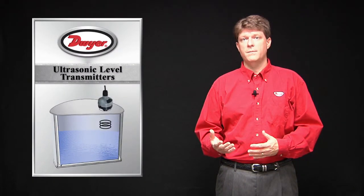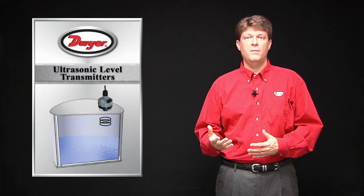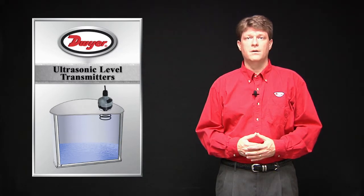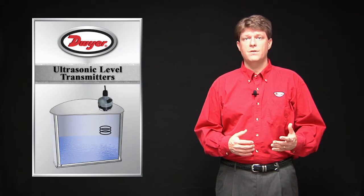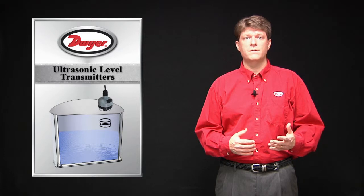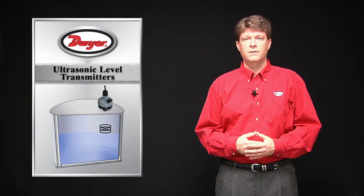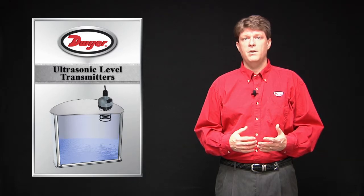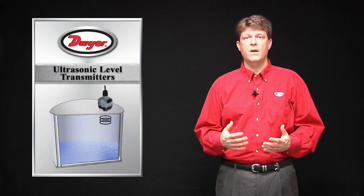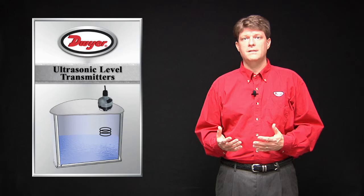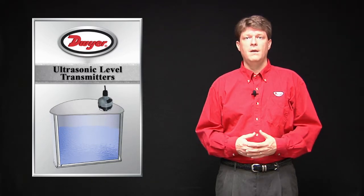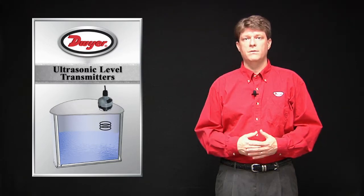Ultrasonic level transmitters emit high frequency sound pulses from the base of the transducer. Each pulse travels through the air, reflects off the liquid surface, and the echo returns back to the transducer where it is received. The sensor measures the time interval from pulse transmission to echo receipt and translates this time into distance or liquid level based on the speed of sound.